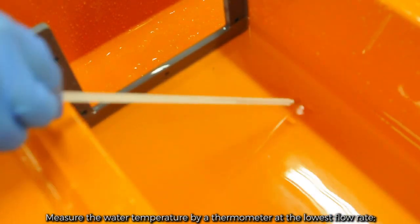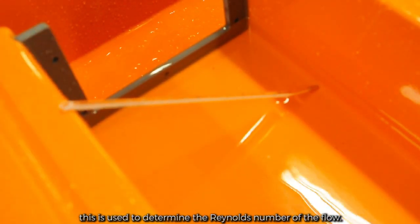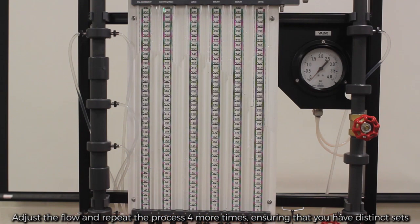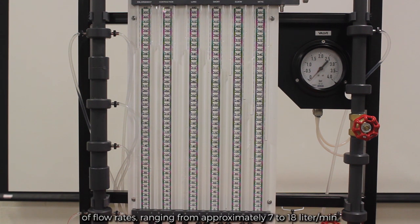Measure the water temperature with a thermometer at the lowest flow rate. This is used to determine the Reynolds number of the flow. Adjust the flow rate and repeat the process 4 more times, ensuring that you have 4 distinct sets of flow rates, ranging from approximately 7 to 18 liters per minute.